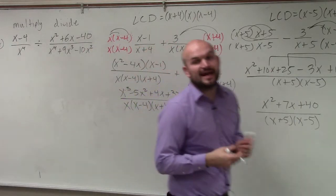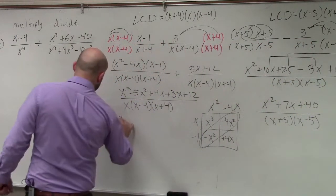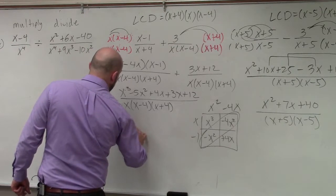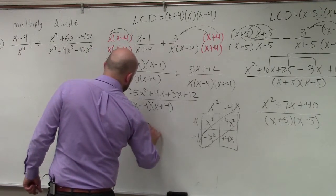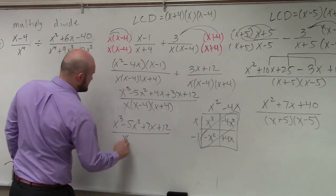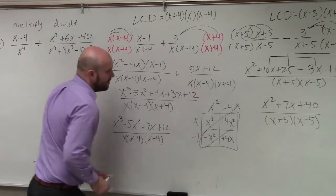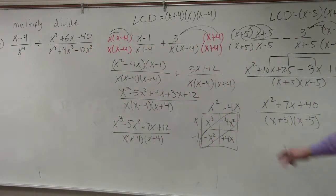And then you guys can see that I can add the 4x and the 3x to provide 7x, right? So my final answer is x cubed minus 5x squared plus 7x plus 12, all divided by x times x minus 4 times x plus 4. Does everybody have this written down?